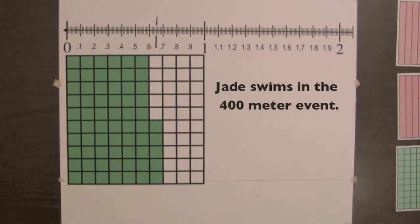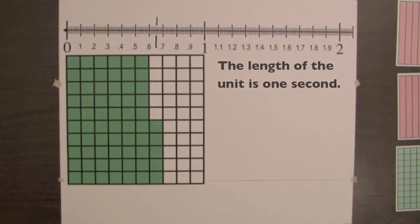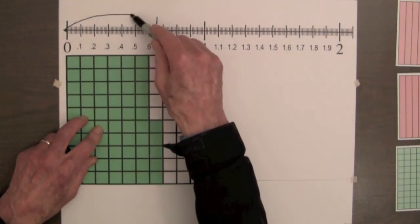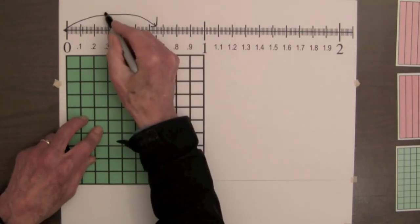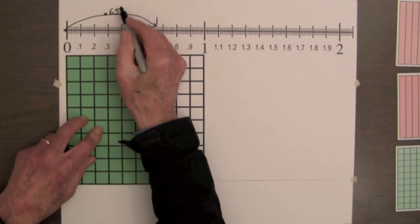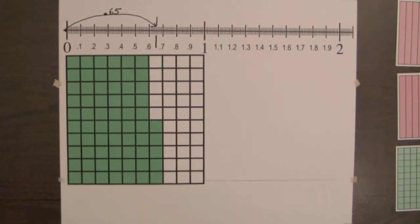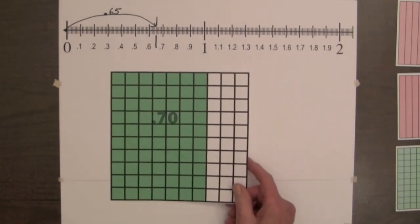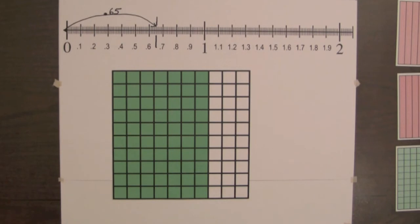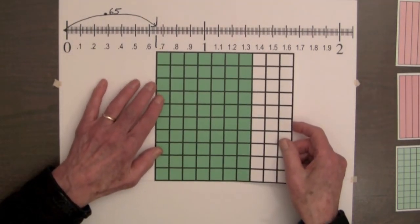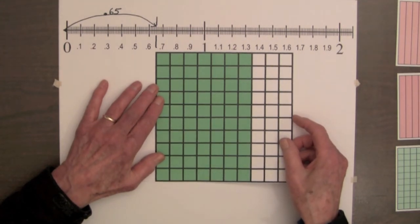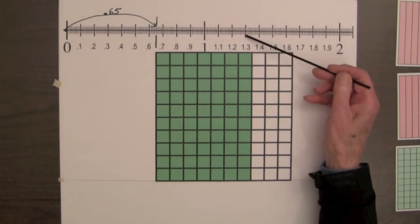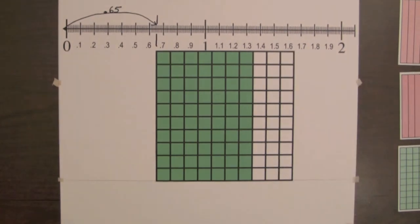Suppose Jade is able to decrease her time in the 400-meter freestyle swimming event by sixty-five hundredths of a second. If the line from zero to one represents one second, we can mark her decrease in time on the number line — sixty-five hundredths of a second. With further training, Jade is able to decrease her time by another seventy-hundredths of a second. We can illustrate this by a decimal square with seventy parts out of a hundred shaded, and we can see that the shaded amount goes about halfway between one and three-tenths and one and four-tenths.